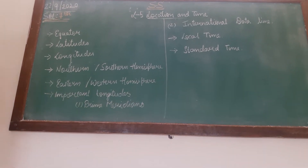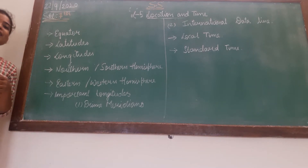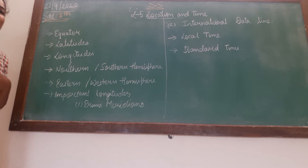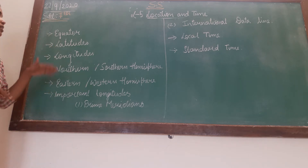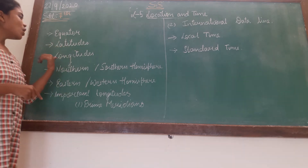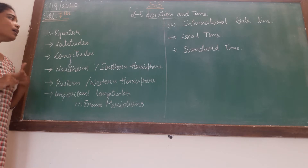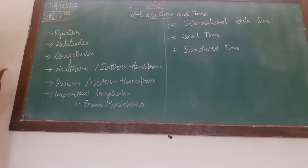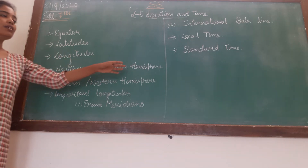Okay class, in this chapter we have seen what equators are, what latitudes and longitudes are. They are imaginary bands that pass around the globe. The ones passing from north to south are latitudes and the ones from east to west are longitudes. We have also seen some important latitudes like the equator, and how the equator divides the globe into northern and southern hemispheres.